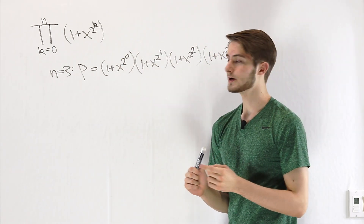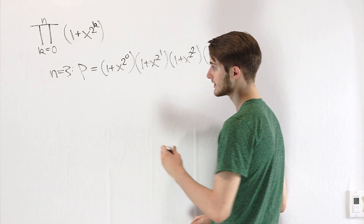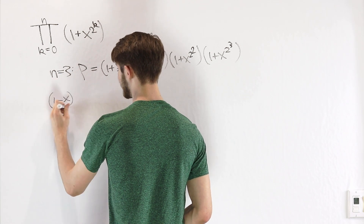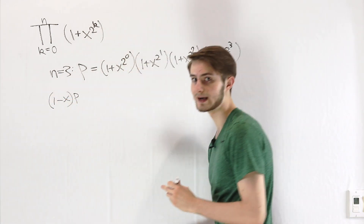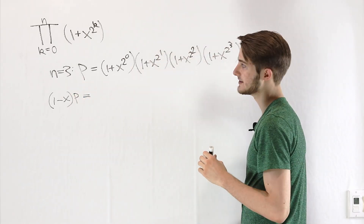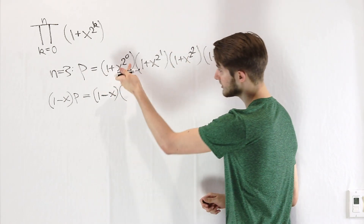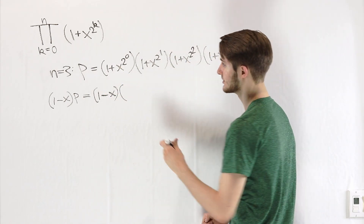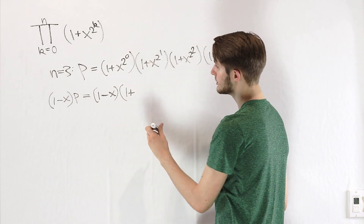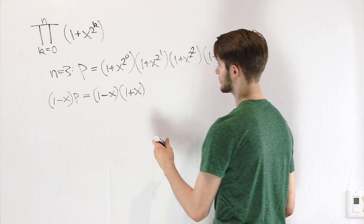We have to think about a way to simplify this. In order to do that, we're going to do a clever trick on this equation, which is to multiply both sides by 1 minus x. Let's see what we get on the right side. Notice when we rewrite this product that we can simplify the exponents of these x's. If we look at the first term, 2 to the 0 is 1, so what we really have here is just 1 plus x to the first power.